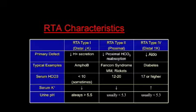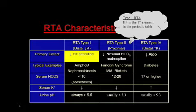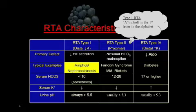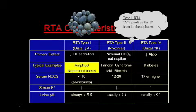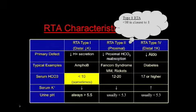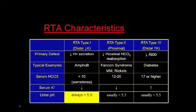Type 1 RTA is due to impaired hydrogen secretion distally. Hydrogen is the first element — this is RTA type 1, so that's one way you might remember this. Amphotericin is a drug-induced cause, but it's also thought that repeated damage from kidney stones may be another cause. Serum bicarb is very low, potassium is low, and importantly, urine pH is always greater than 5.5.